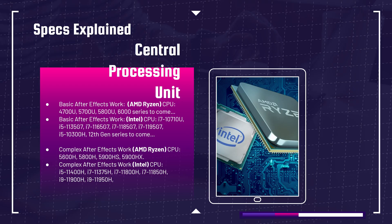Now that we understand what Adobe is looking for, let's talk about how to pick the right laptop. Starting with the CPU: if you just need a little bit of After Effects work — maybe you're a graphic designer or digital artist who doesn't do a lot of animation — you'd be fine getting a laptop without a dedicated GPU. Most of those come with U series or G series processors. For AMD that's something like the 4700U, 5700U, or 5800U. On the Intel side, look for the i7-10710U, i5-1135G7, 1165G7, or the 1185/1195G7.